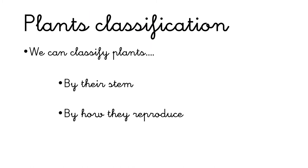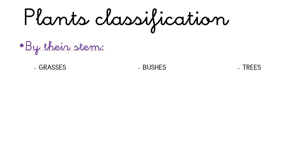Plants can be classified in two groups. The first one is by their stem, and the second one we can classify plants by how they reproduce. First we are going to study the plants classification by their stem.